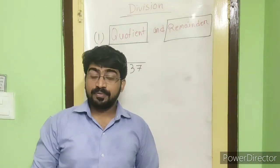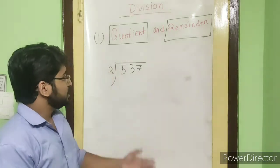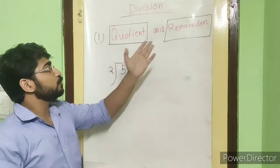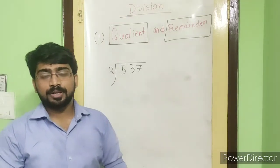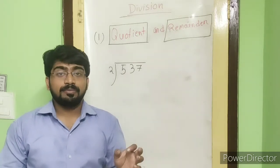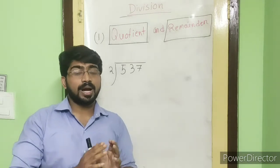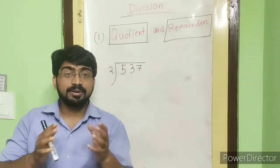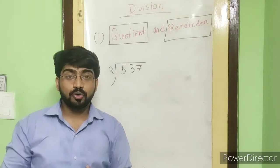Before going to the main calculation, we will look into two words. First: quotient. What is quotient? If we divide a number with another number — more specifically, if we divide a dividend by a divisor — the result which we get is called the quotient.